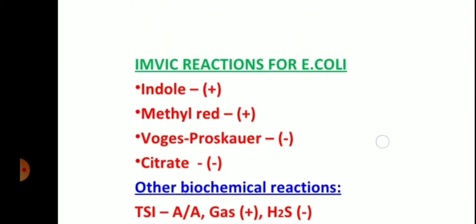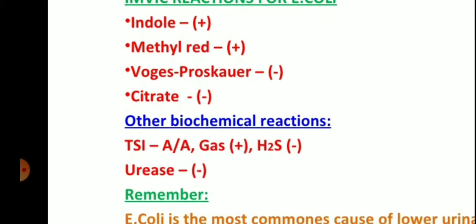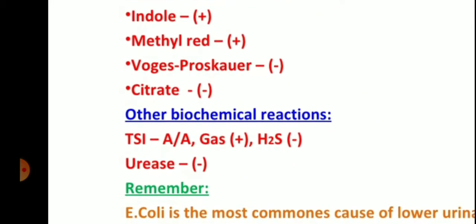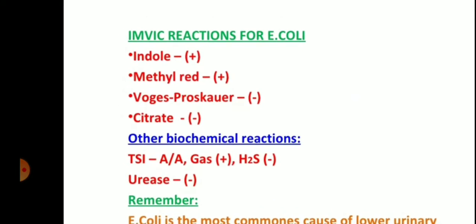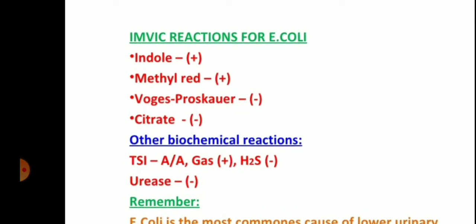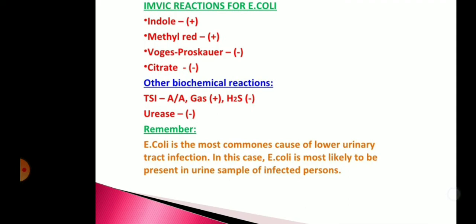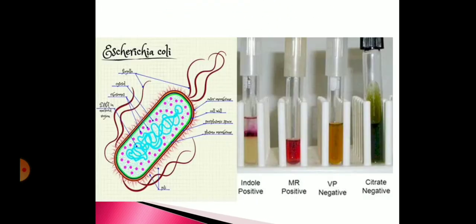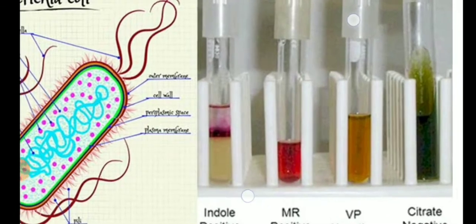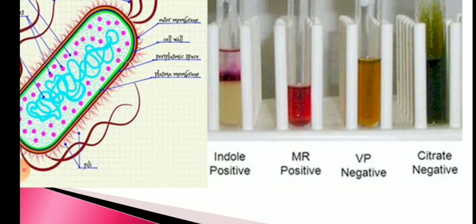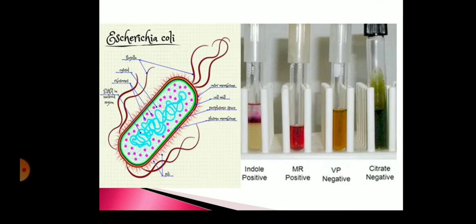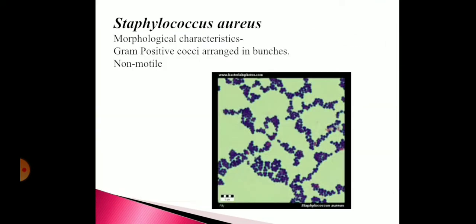Looking at the IMViC classification of E. coli: it is indole positive and methyl red positive, while Voges-Proskauer and citrate are negative. On TSI, it ferments with acid in both slant and butt, produces gas, and there is no H2S production.